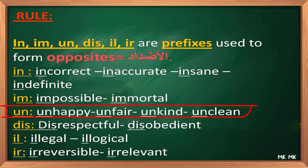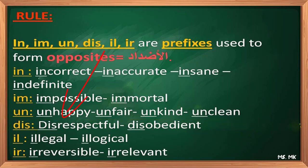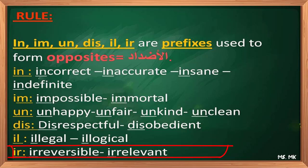As you may notice, different letters take different prefixes. For IL: illegal, illogical — words starting with L generally take IL. For IR: irreversible, irrelevant — words starting with R generally take IR. However, note that 'respectful' becomes 'disrespectful,' not 'irrespectful.' So while these are useful guidelines, it is not always a strict rule — some words must simply be learned.